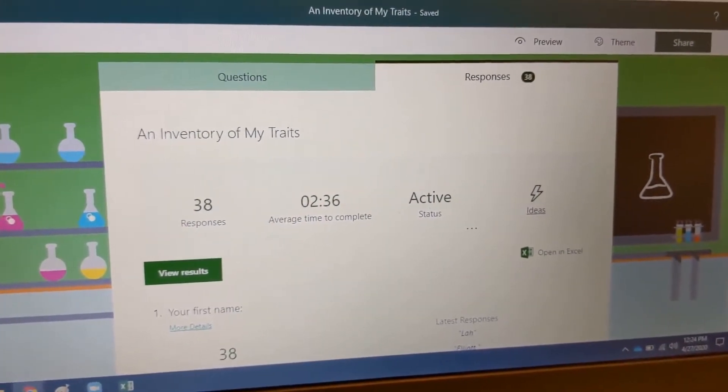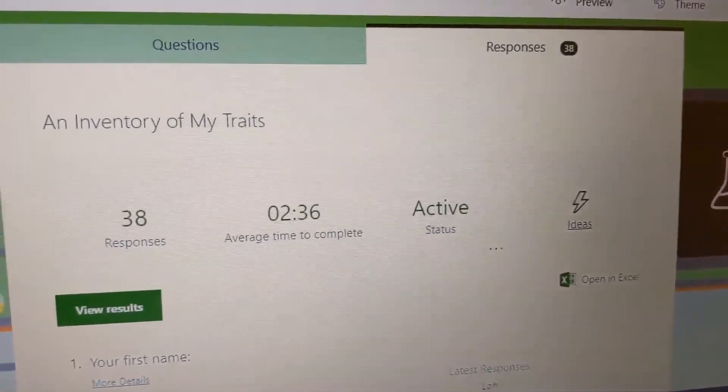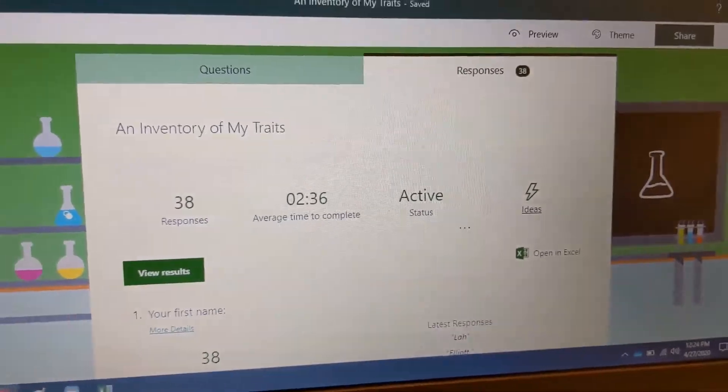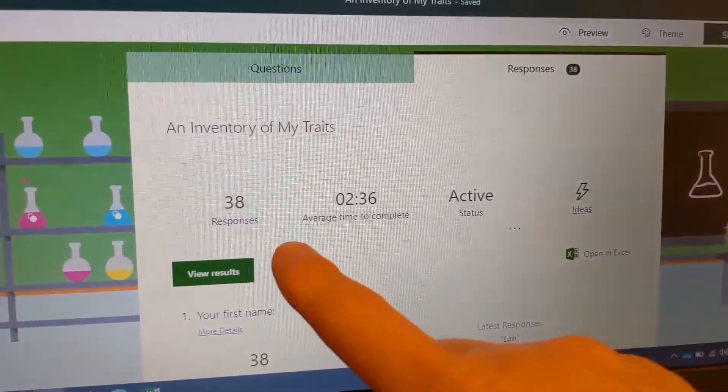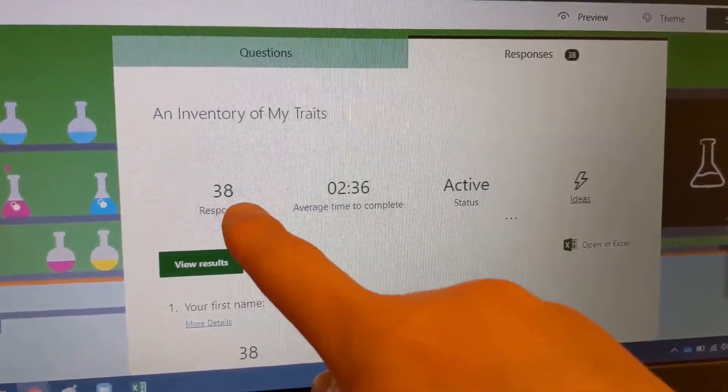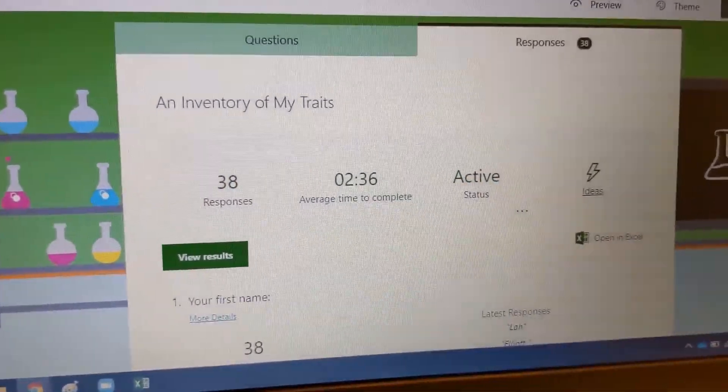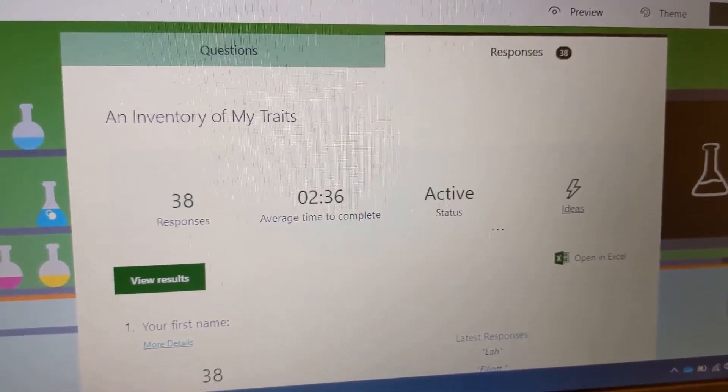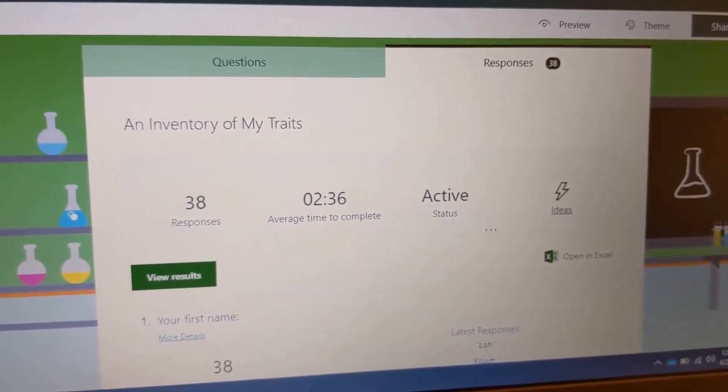Okay, hey students, got the results from the inventory of my traits that you guys filled out on the form. So far, only 37 of you have completed this, the first person was me because I tested it. So 37 students have responded, thank you so much for doing your work, good job.